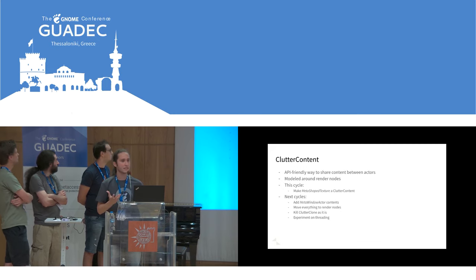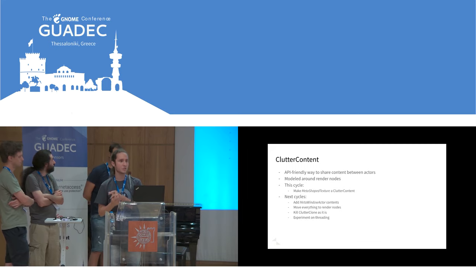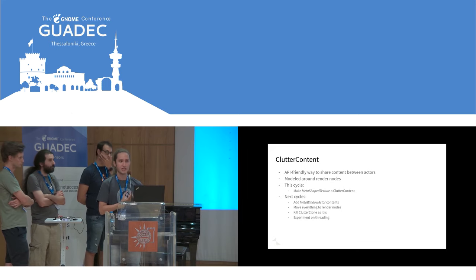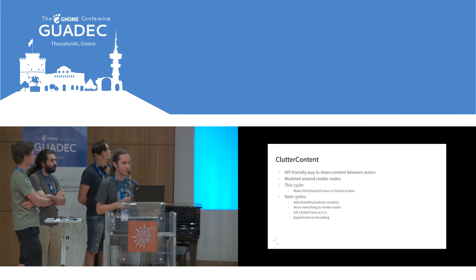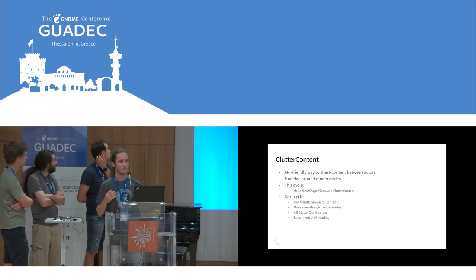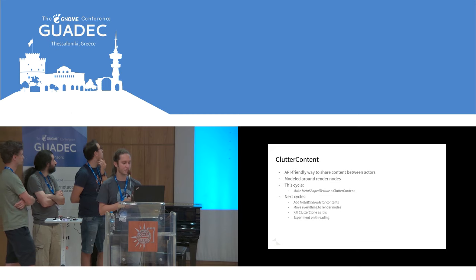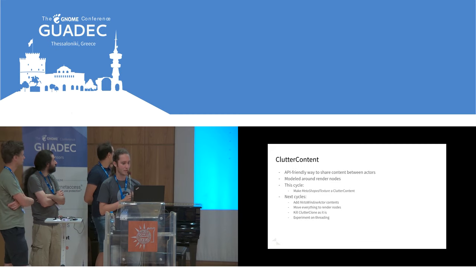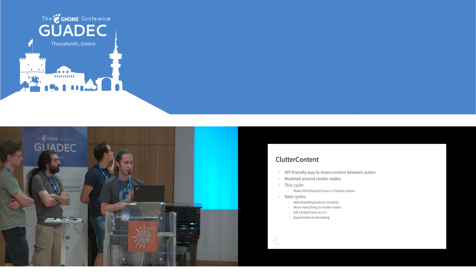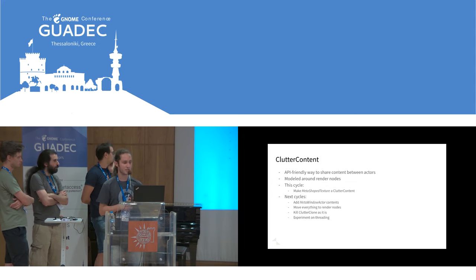Clutter content is essentially a structured way to use those render nodes. This cycle we are landing a very big Clutter content implementation: MetaShapedTexture, probably one of the hardest ones to port. In the next cycles, we will see much more advancement in this area.